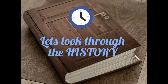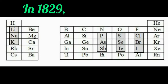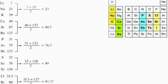Let's look through the history. In 1817, German physicist Johann Döbereiner began to formulate one of the earliest attempts to classify the elements. In 1829, he found that he could form some elements into a group of three, with the members of each group having similar properties. He termed these groups Döbereiner's Triads. In triads, the atomic weight of the middle element was found to be generally the arithmetic mean of the atomic weights of the other two elements.